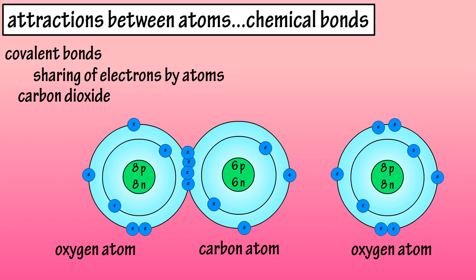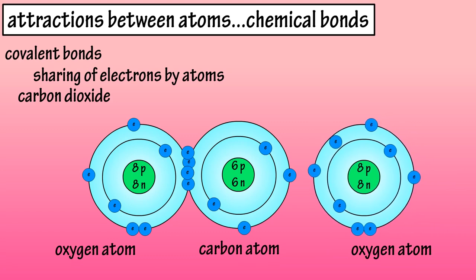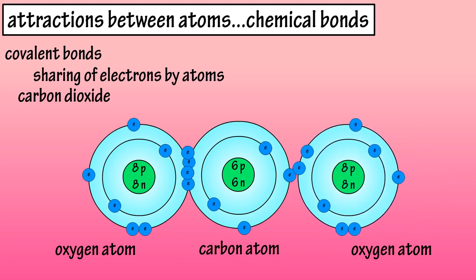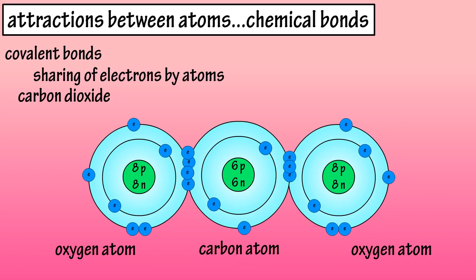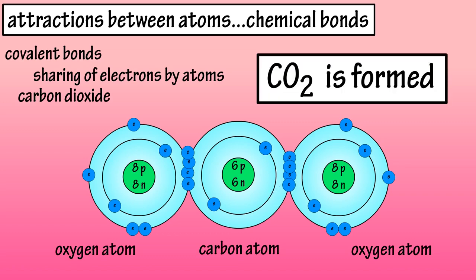Then oxygen atom number two can come in. And like oxygen atom number one, it can share two of its electrons with the carbon atom, and again in return the carbon atom has two more of its own electrons that it can share with oxygen atom number two. So now all three atoms are happy.